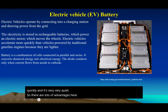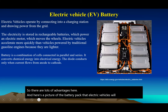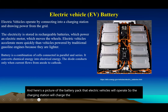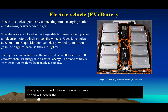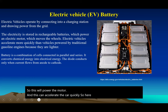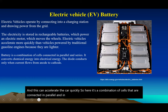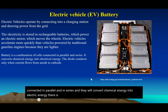Here's a picture of the battery pack. The charging station charges the battery pack, which powers the motor for quick acceleration. It's a combination of cells connected in parallel and in series that convert chemical energy into electrical energy — a diode with an anode and a cathode.